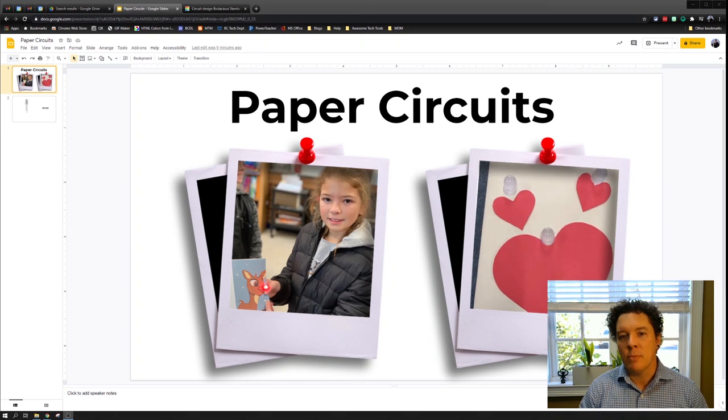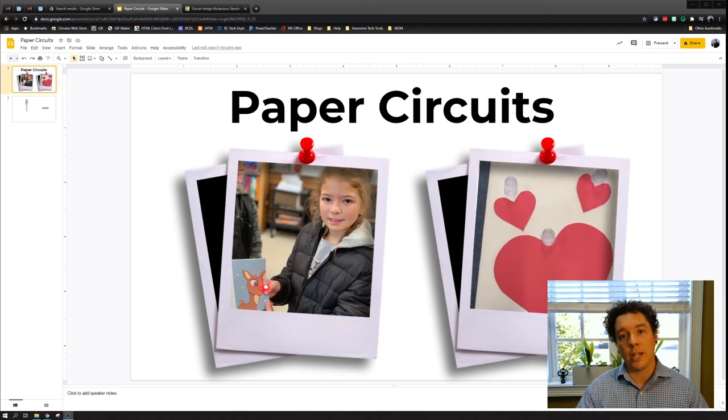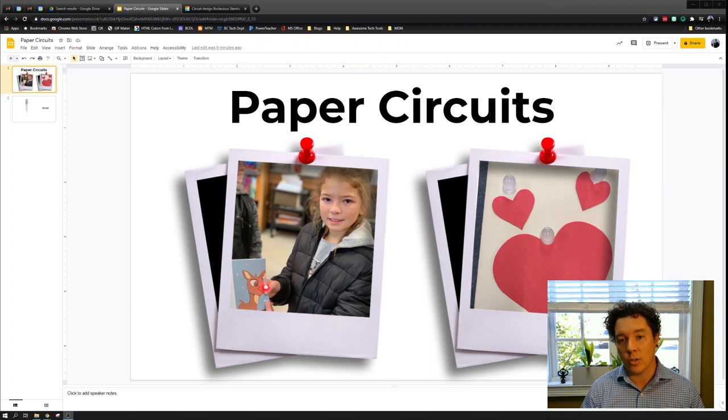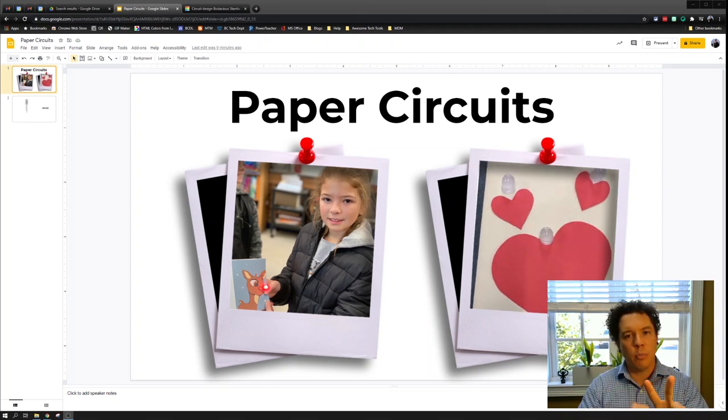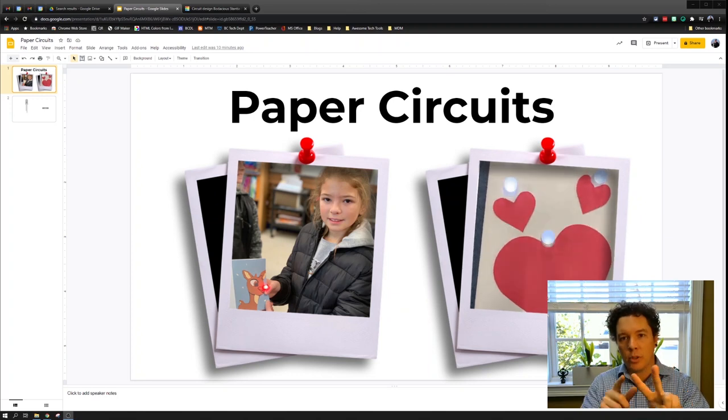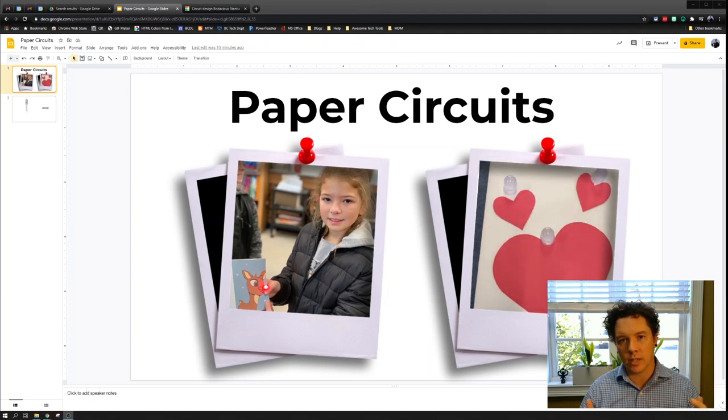One thing you need to know about this watch battery - it's different from when you plug in a light bulb at home. At your house, you have AC electricity, alternating current, so it can flow in either direction. It really doesn't matter how you power your light bulb with positive and negative because it can alternate and flow either direction.